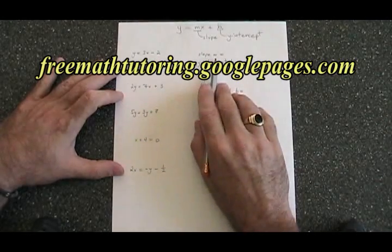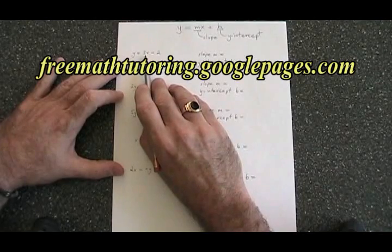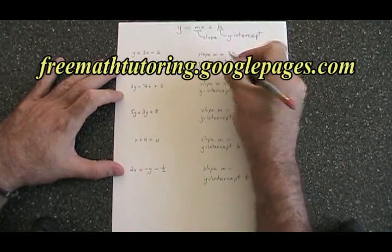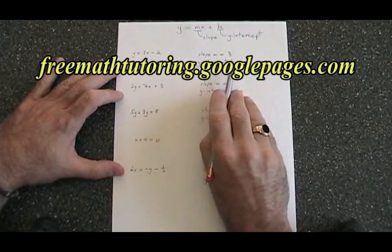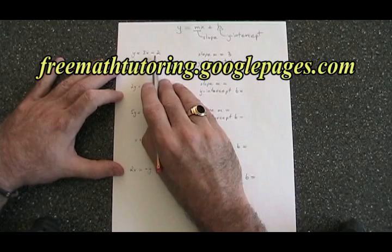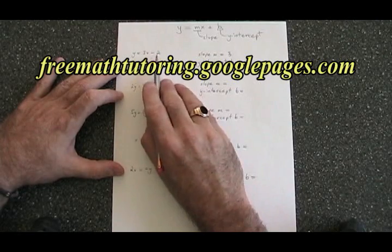The slope m is equal to the numerical coefficient of x, so in this case the slope is 3. The y-intercept b is equal to the constant term with its sign, so in this case b is equal to negative 2.